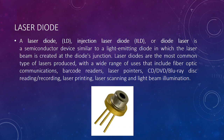Next is the laser diode. A laser diode, or LD, injection laser diode ILD, is a semiconductor device similar to a light emitting diode in which the laser beam is created at the diode's junction. Laser diodes are the most common type of lasers produced, with a wide range of uses that include fiber optic communications, barcode readers, laser pointers, CD, DVD, Blu-ray disk reading or recording, laser printing, laser scanning, and light beam illumination. Below we can also see a figure of a laser diode.